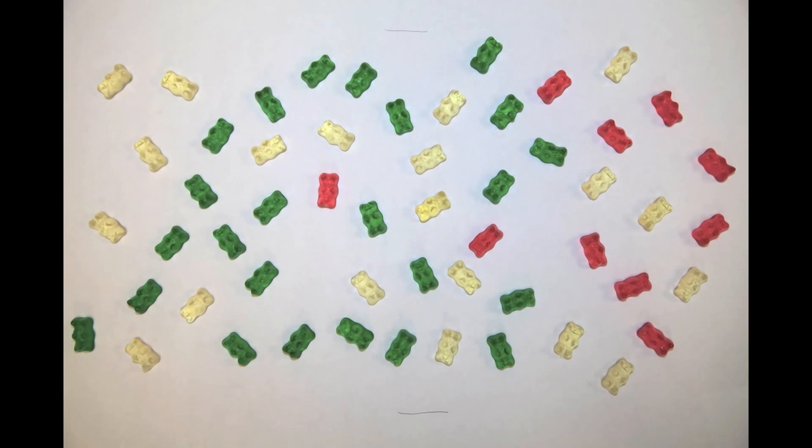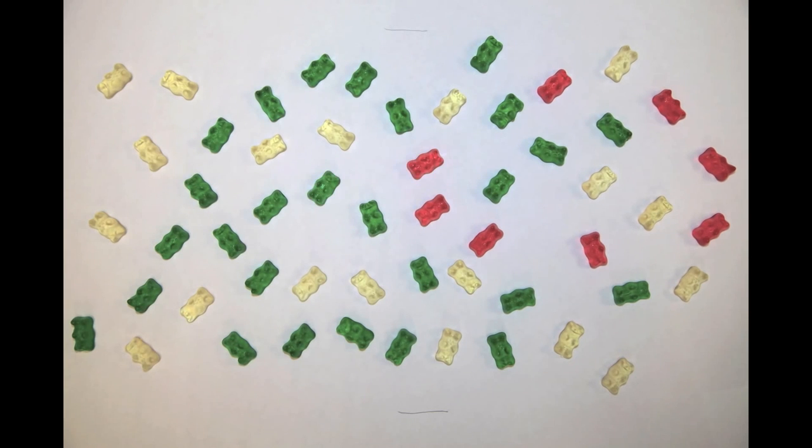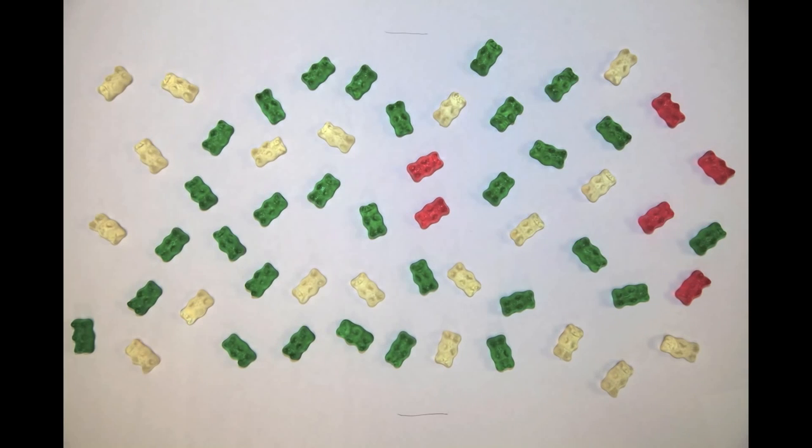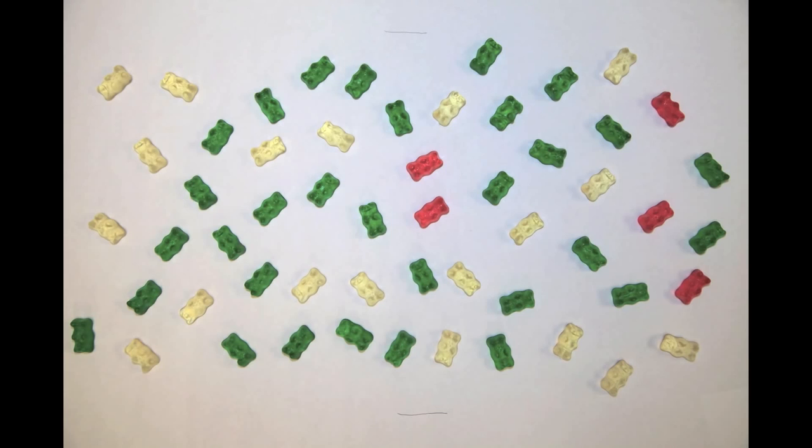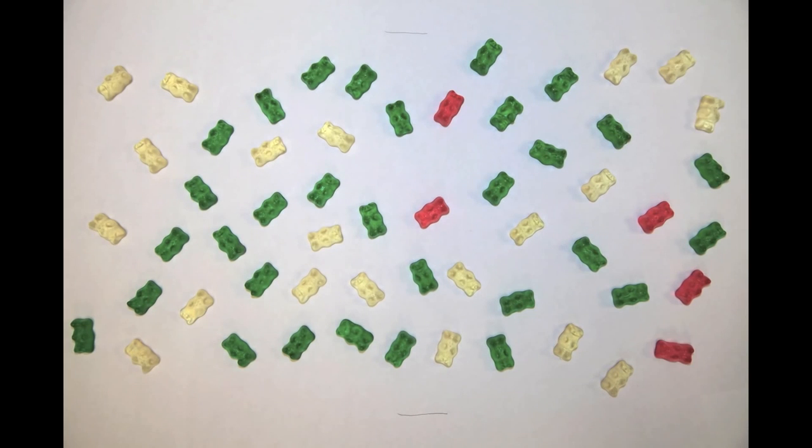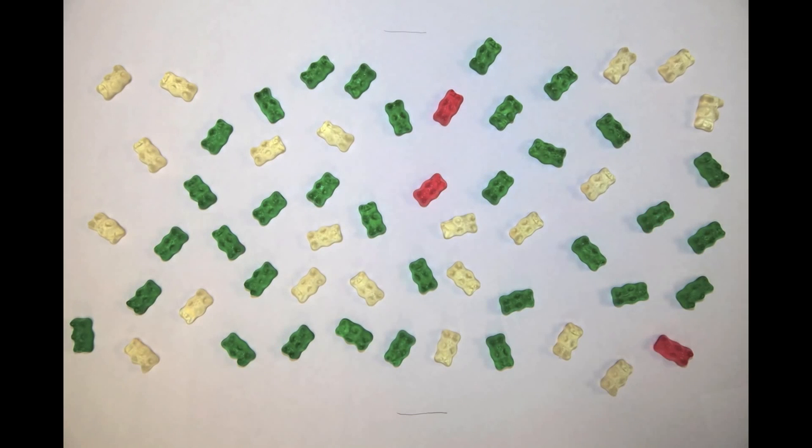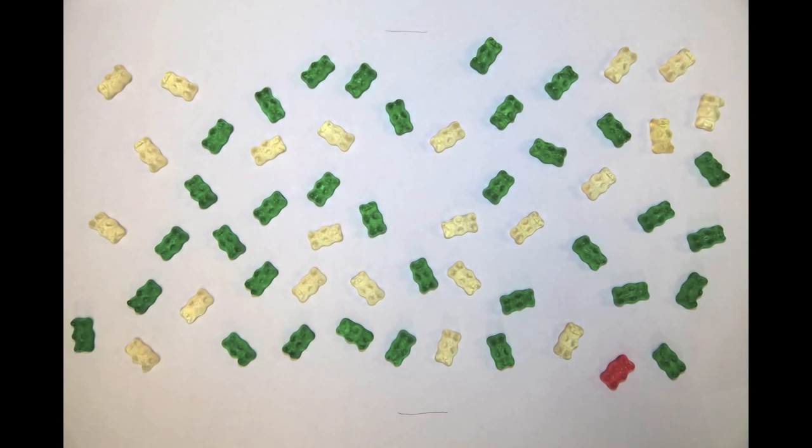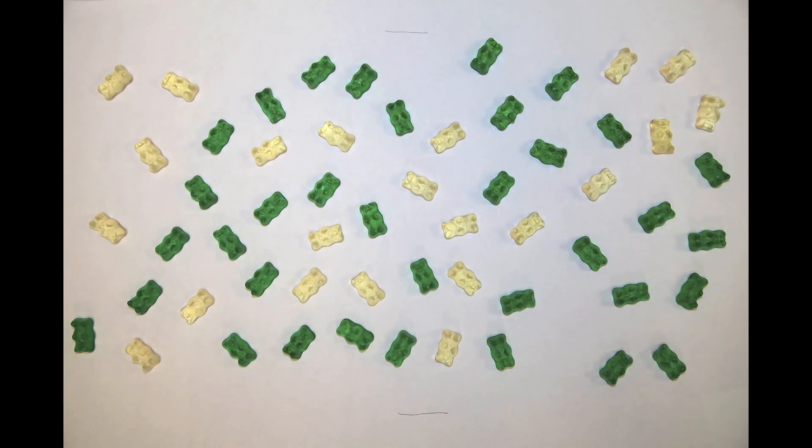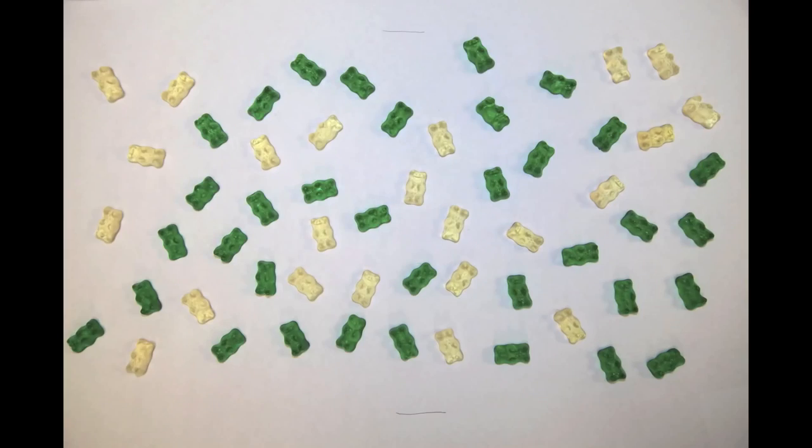Assuming that all the gummy bears in our population are going to interact with a certain number of other bears one way or another, it's better for the overall population for red bears to interact with green bears rather than white bears, since the white bears are susceptible and the green bears aren't. As the number of green bears in the population increases, the chances of a red bear meeting a white bear go down until there aren't enough white bears left to sustain the disease in the population.